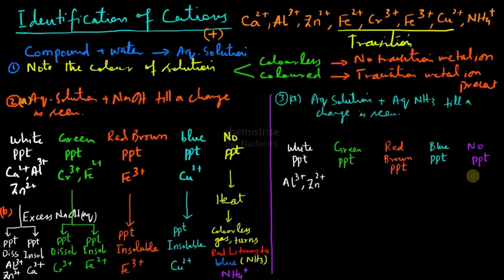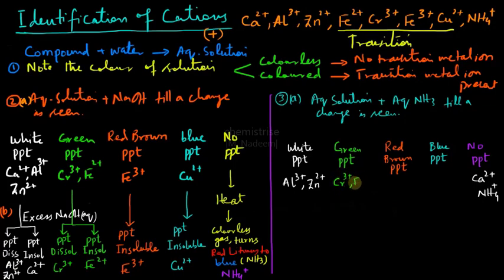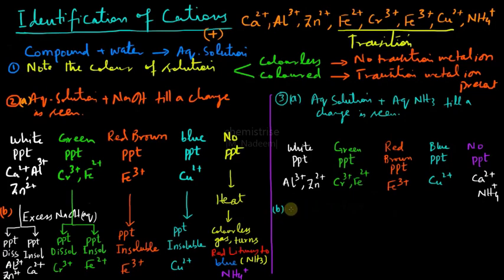In Test 3, calcium gives no precipitate, and ammonium (NH₄⁺) shows no reaction. The green precipitate is again due to the same cations — Cr³⁺ and Fe²⁺. Red-brown precipitate is due to Fe³⁺ and blue precipitate is due to Cu²⁺. Now for Test 3B, we add excess aqueous ammonia to the same test tube containing these precipitates.